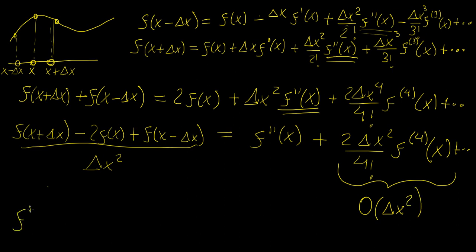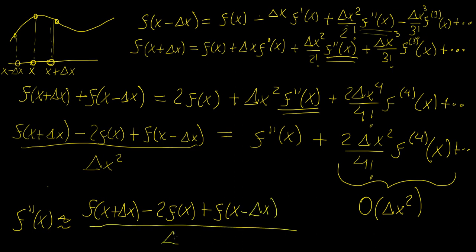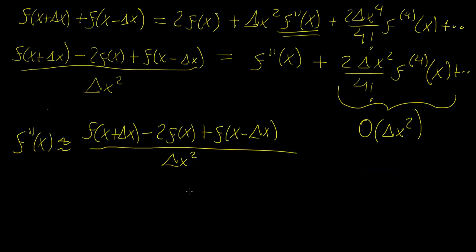So in the end, our finite difference approximation for f double prime of x is going to be the following. We're going to have f of x plus delta x minus 2 f of x plus f of x minus delta x, and then all of this over delta x squared. And we know that the accuracy or the truncation error in this case is going to be in orders of magnitude of delta x squared, so it's reasonably good. I mean, we could get away with some computations based on that sort of accuracy, as long as delta x is quite small. And this gives us the value of the derivative, or the second derivative rather, at that central point.